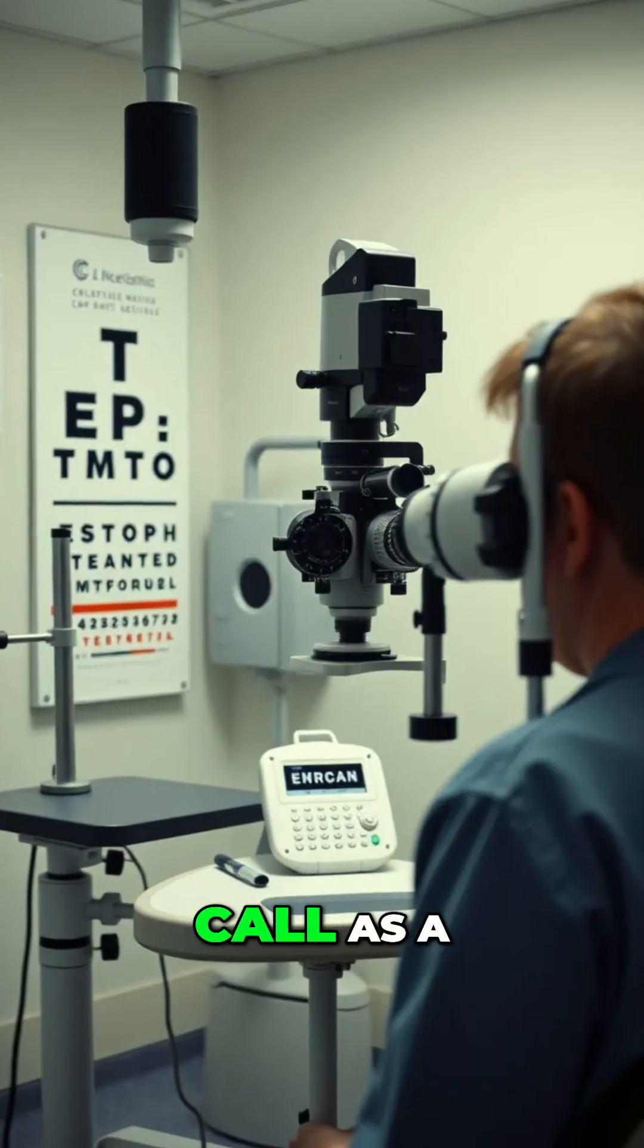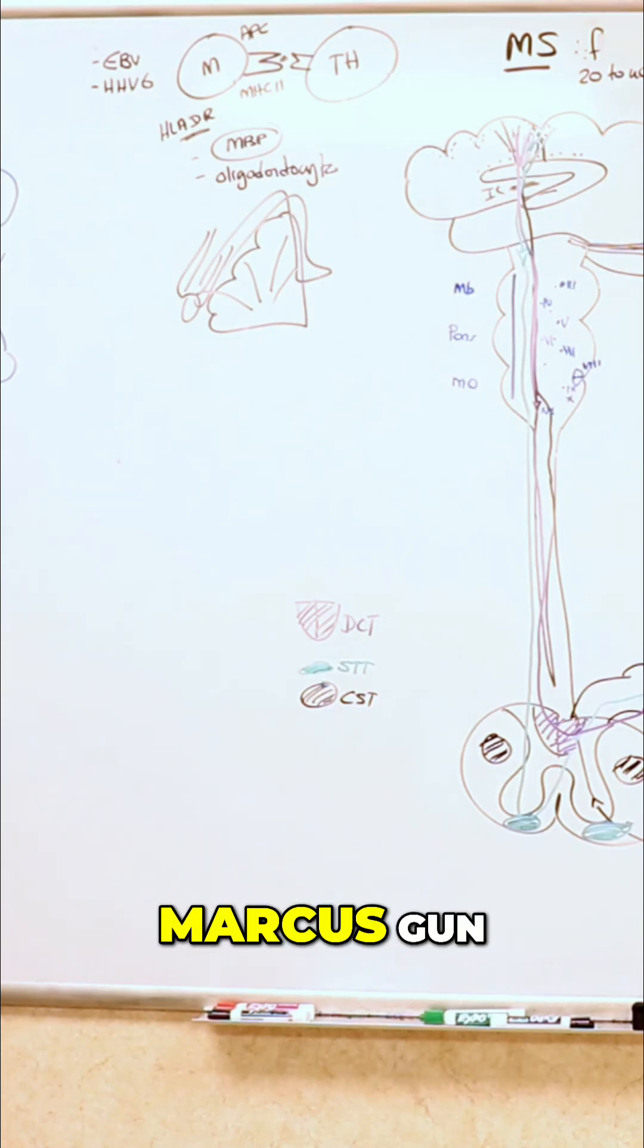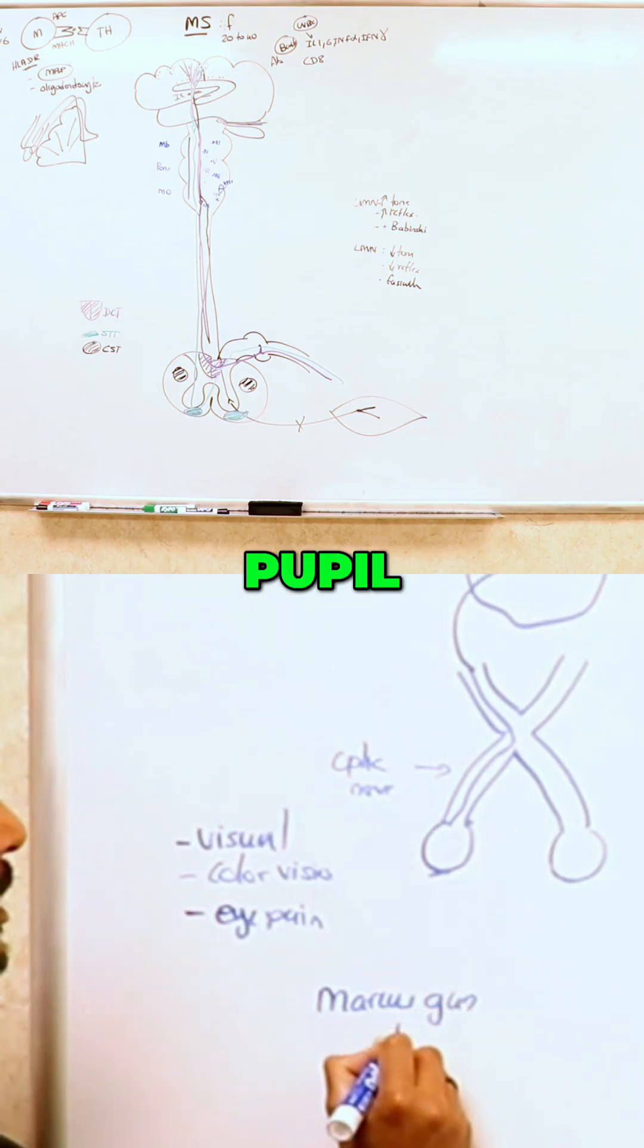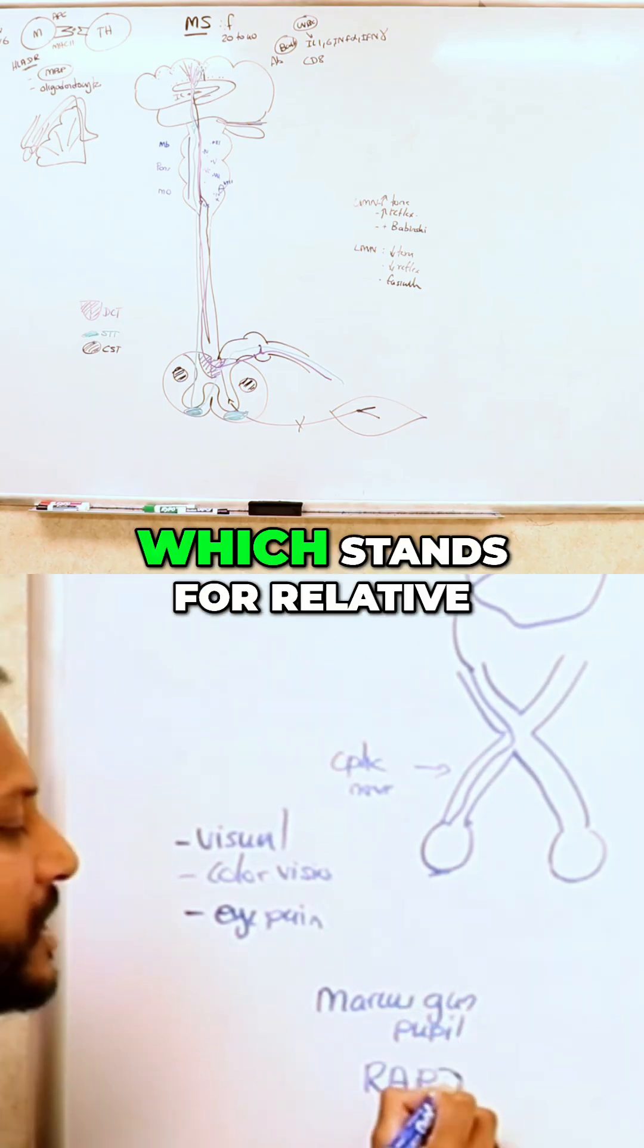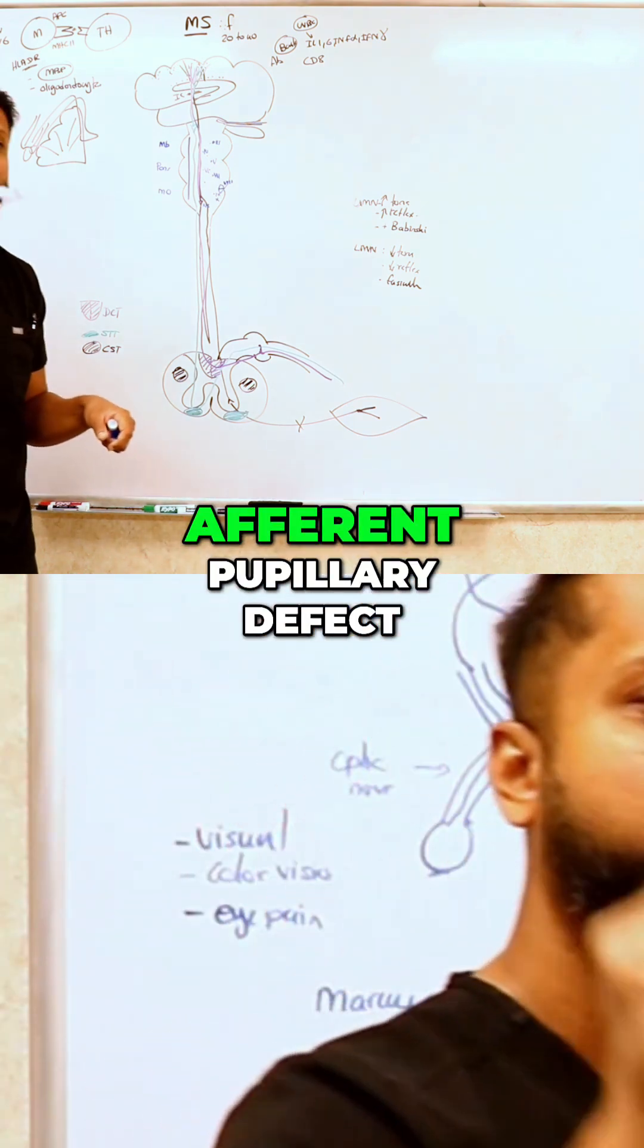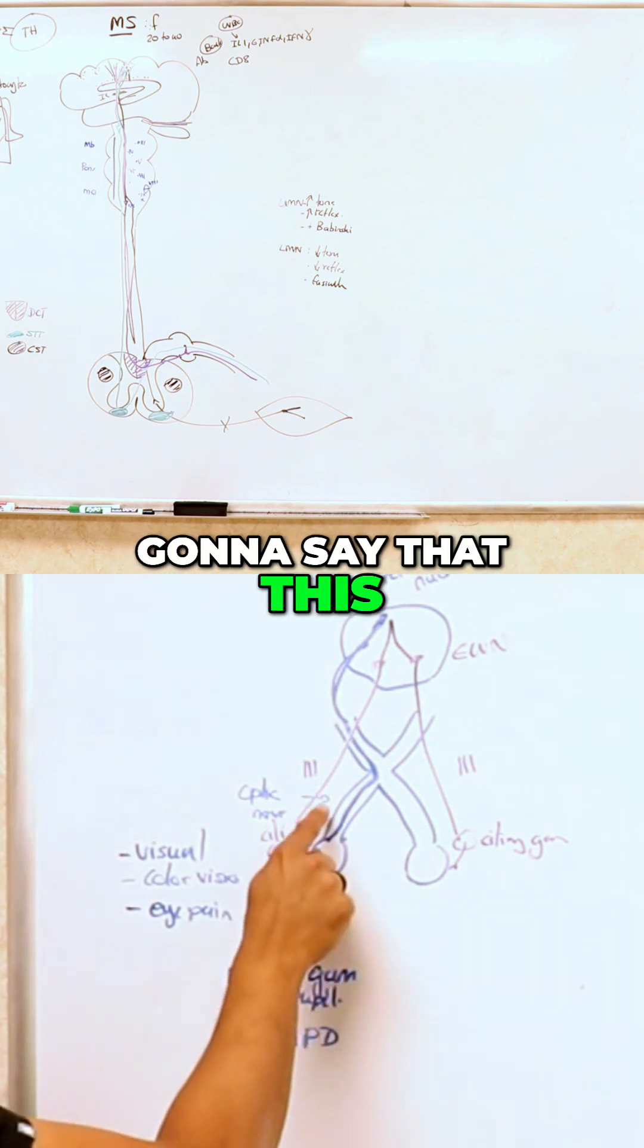You get something we call a Marcus Gunn pupil, which is also known as RAPD, which stands for relative afferent pupillary defect. What we're going to say is this patient has MS and therefore has optic neuritis.